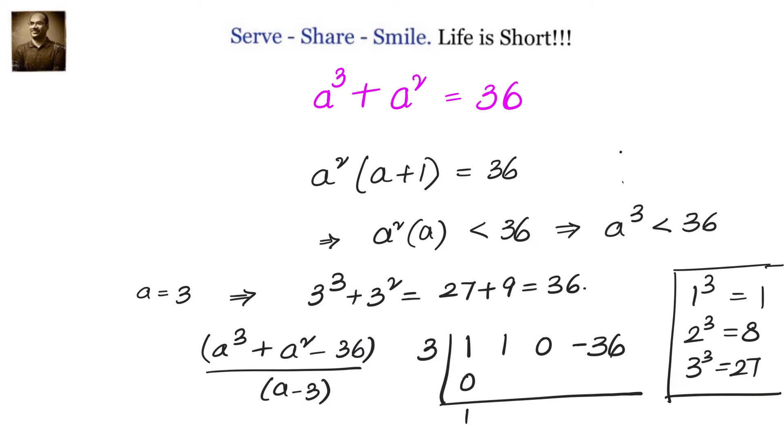Since we are dividing by A - 3, we will write down 3 on the left side, add them and multiply with the 3, and we will do the synthetic division. We get the quotient as A² + 4A + 12.